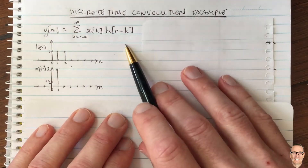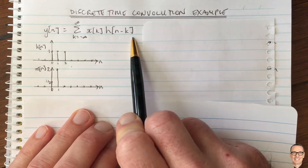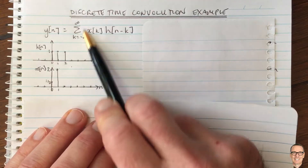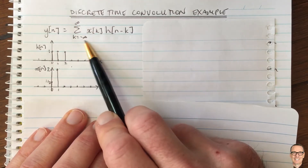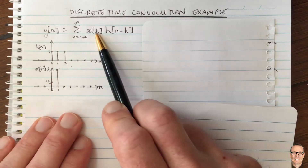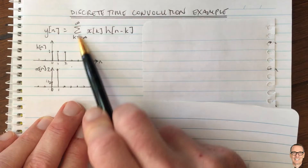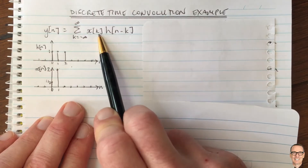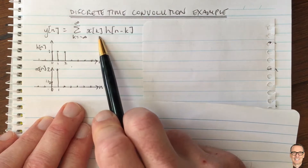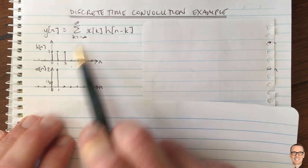One thing we could do now is start calculating the convolution using the equation. We can look at this equation and think about how to evaluate this infinite summation. We can notice that for this example, x[k] is mostly zeros, so most of the terms in this summation will equal zero because x[k] equals zero for those values of k.